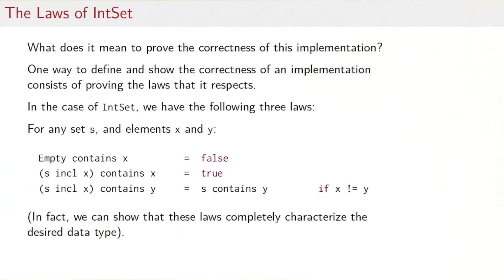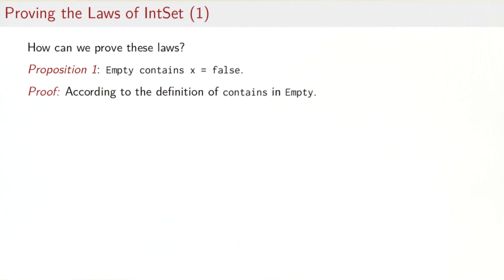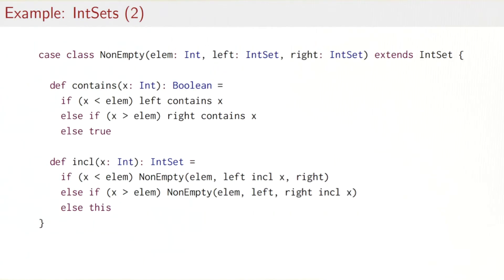In fact, one can show that these three laws completely characterize what it is to be an int set. So we now have an algebraic specification of int sets which is complete. But it still remains to prove these laws. Let's start with the first one: empty.contains(X) equals false. That one is actually easy because it's a direct consequence of the definition of contains in empty — empty.contains of any element gives us false.